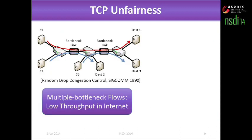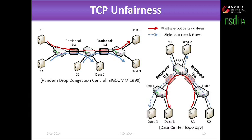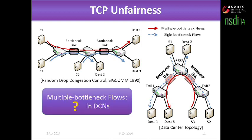Then we will look at TCP unfairness. In the internet, multi-bottleneck flows always suffer low throughput — this was presented in a paper from the 1990s. We think the same thing happens in data center networks, though you might say it's different because of different round-trip times, topologies, and bandwidth. We also ran experiments on what happens to multi-bottleneck flows in data centers.